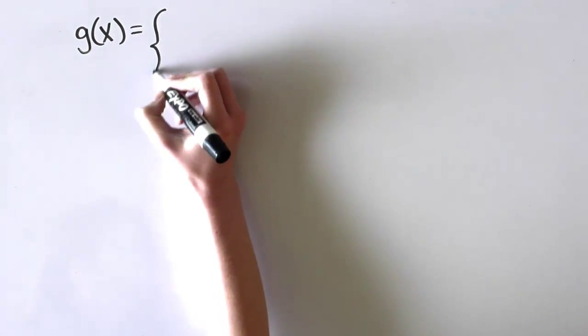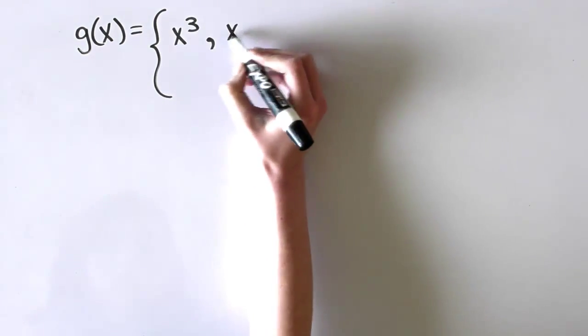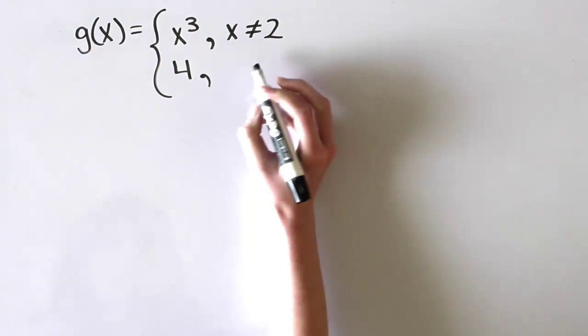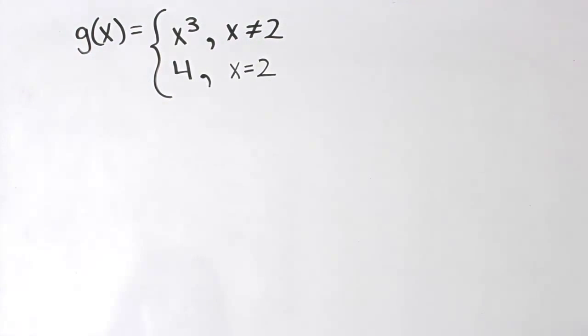Let's do a second example of finding a limit. g of x can be defined as x cubed when x doesn't equal 2, but 4 when x does equal 2. Again, we have a discontinuity, but in this example, f of 2 is defined as 4.